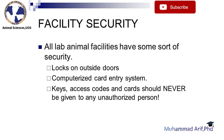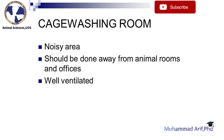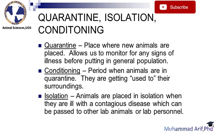All lab animal facilities have some sort of security, including locks on outside doors and computerized card entry systems. Keys, access codes, and cards should never be given to any unauthorized person. The cage washing room is a noisy area and should be located away from animal rooms and offices, and must be well ventilated.